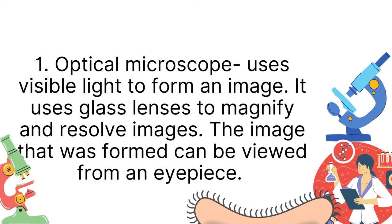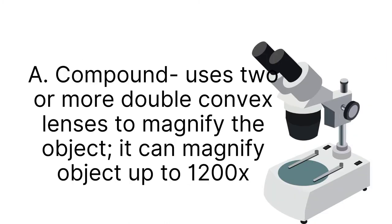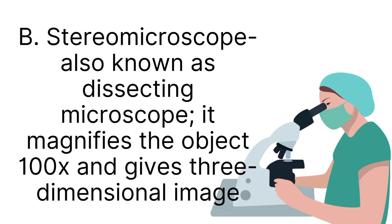Compound microscope uses two or more double convex lenses to magnify the object. It can magnify objects up to 1,200 times. Stereo microscope, also known as dissecting microscope, magnifies the object 100 times and gives three-dimensional image.